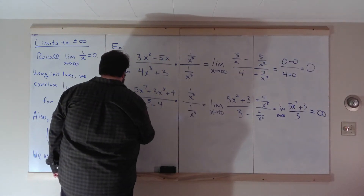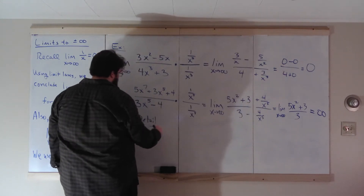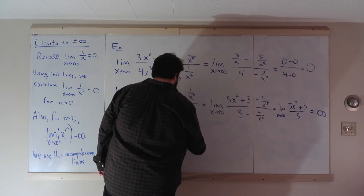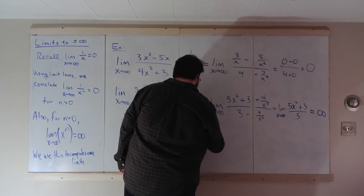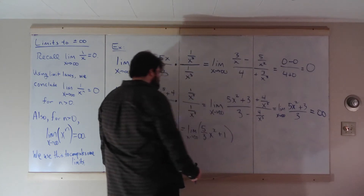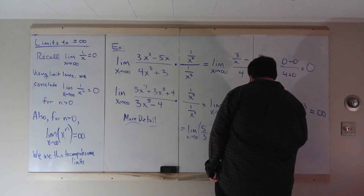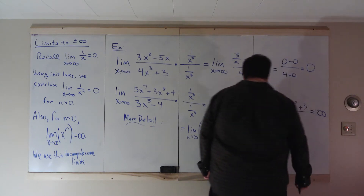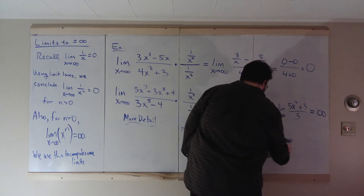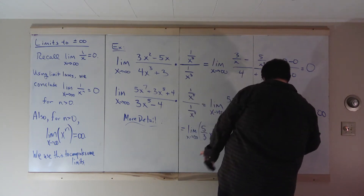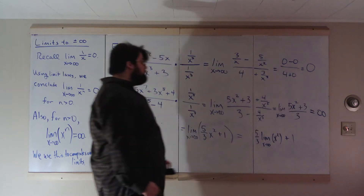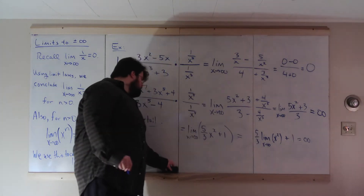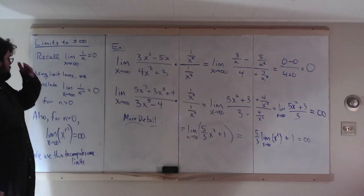For more detail: we can reduce the fraction to (5/3)x² + 1. Using limit laws, that equals (5/3) times the limit as x goes to infinity of x², plus 1 — and since x² goes to infinity as x goes to infinity, that limit equals infinity.